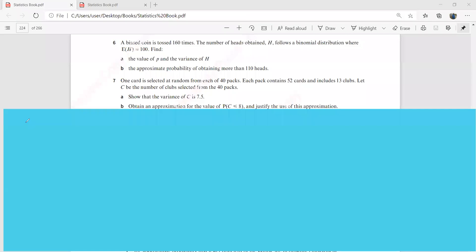Okay guys, we are going to try this sixth question out here. It says a biased coin is tossed 160 times. So your n is 160.